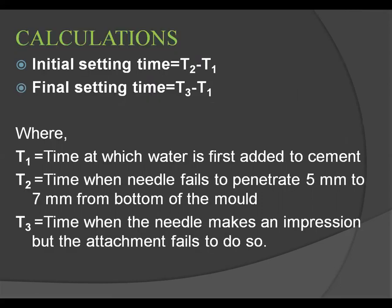For calculations: the initial setting time is given by T2 minus T1, and the final setting time is given by T3 minus T1. Here, T1 is the time at which water is first added to cement, T2 is the time when the needle fails to penetrate 5 mm to 7 mm from the bottom of the mould, and T3 is the time when the needle makes an impression but the annular attachment fails to do so. Thank you.